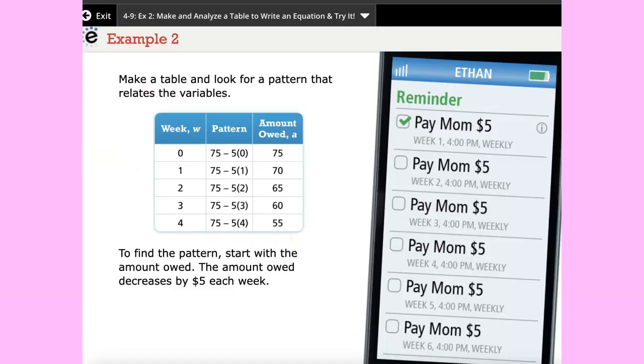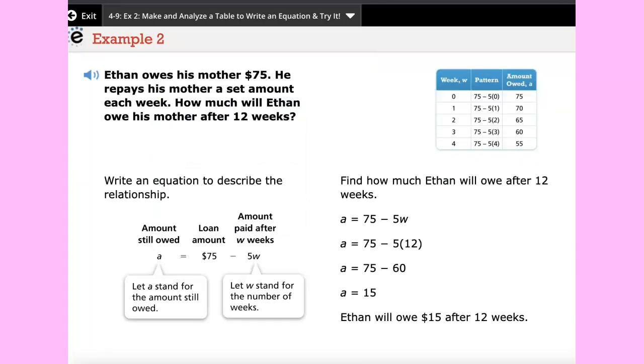To solve this problem you could create a table that shows how much you pay per week, or Ethan pays per week. And then the pattern starts with the amount owed and then it goes down decreasing five dollars each week. Continue the table.